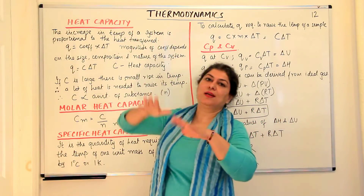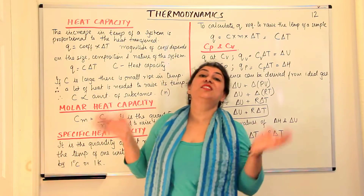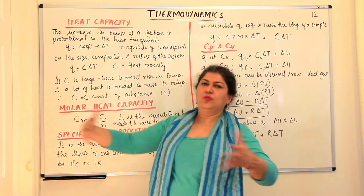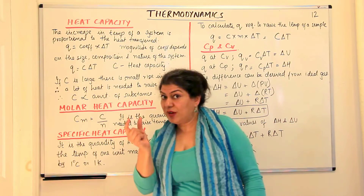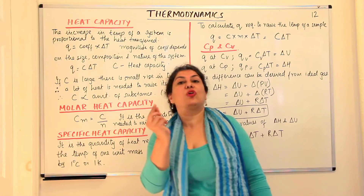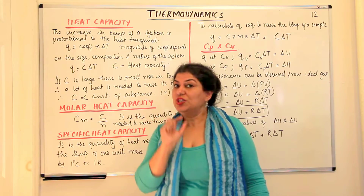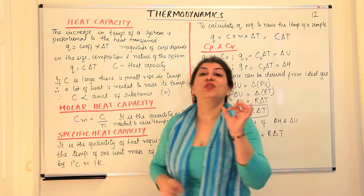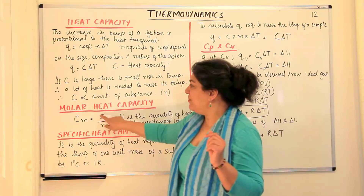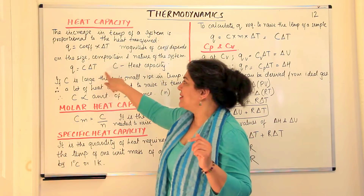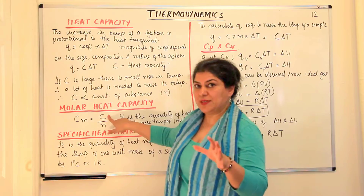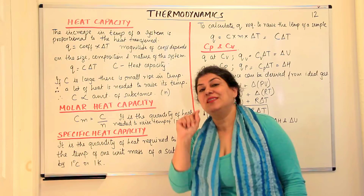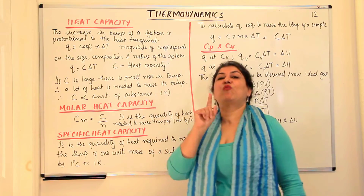The difference: molar heat capacity is for one mole, specific heat capacity is for one gram — a unit mass. Heat capacity itself is a general, extensive property. Specific heat capacity is represented by the symbol small c. Until now we have been using capital C for heat capacity and molar heat capacity. Specific heat capacity uses small c, which represents heat capacity for one gram.